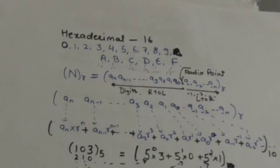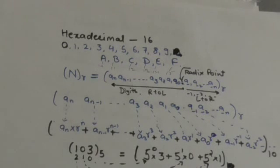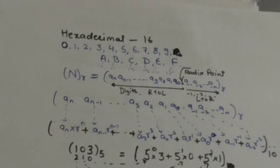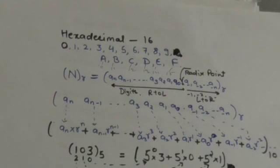The hexadecimal number system is of base or radix 16. Since it is of base 16, we have 16 digits: 0, 1, 2, 3, 4, 5, 6, 7, 8, 9, A, B, C, D, E, F. Here A represents the value 10, B represents 11, C represents 12, D represents 13, E represents 14, and F represents the value 15.